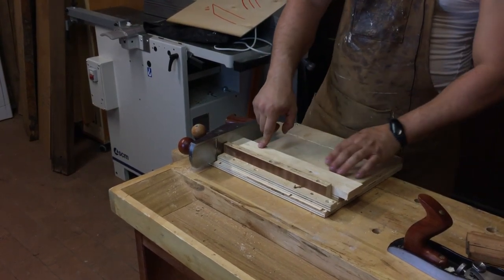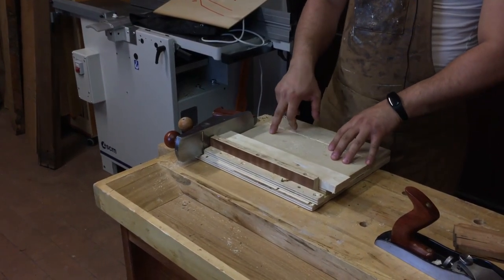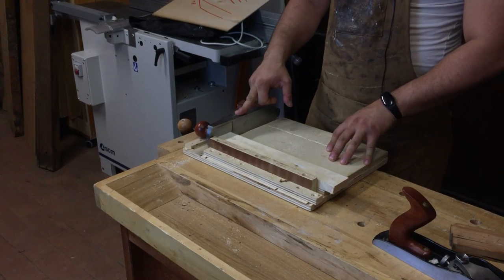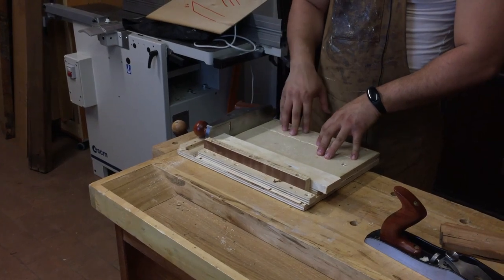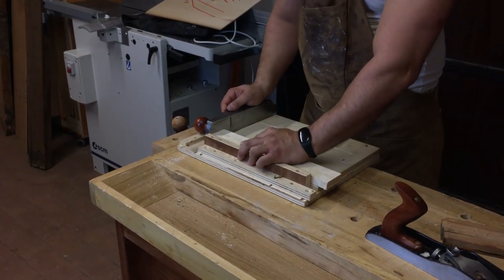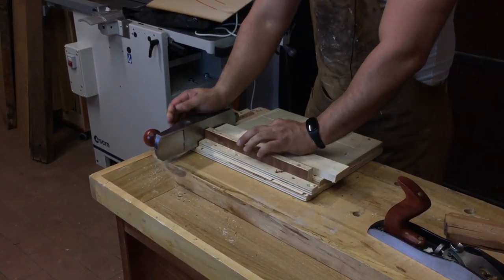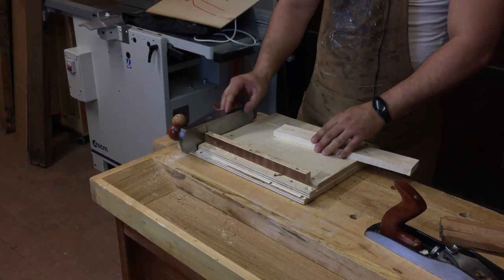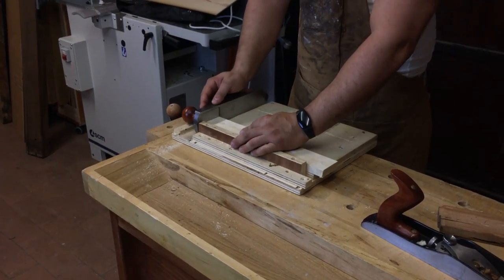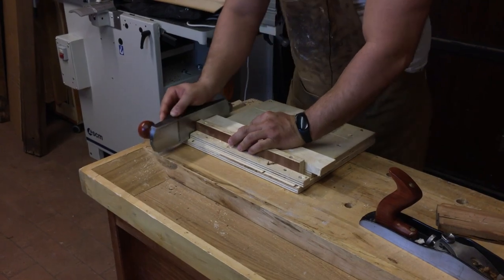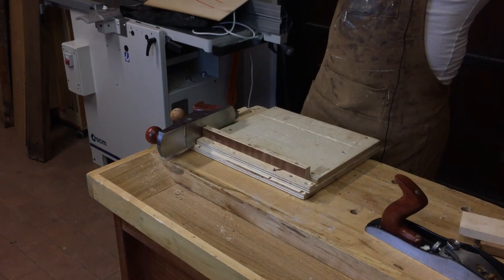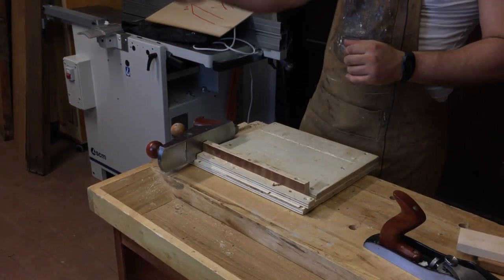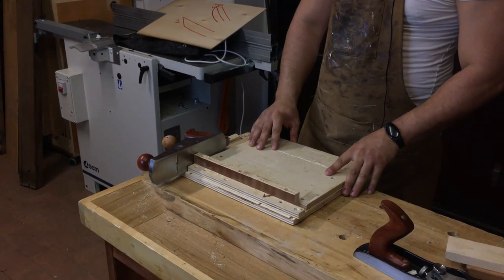The Veritas plane is very good also in taking care about shooting board issues. They are flat, they are square, they are very well machined and so it is very easy to create a shooting board like this and taking to 90 degrees all the pieces you cut out with a miter saw, with a table saw or whatever.